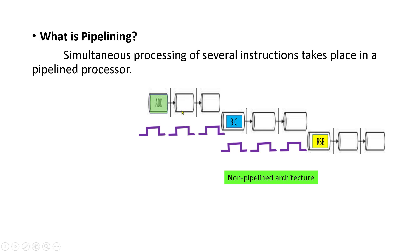In the second clock cycle, the fetched opcode is decoded to understand what needs to be done. The processor understands the meaning of the instruction in this stage. In the third clock cycle, the instruction is executed and the result is written back into the register file. This is how the instruction is executed in a non-pipelined architecture.